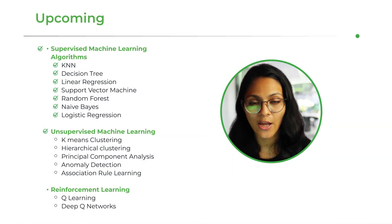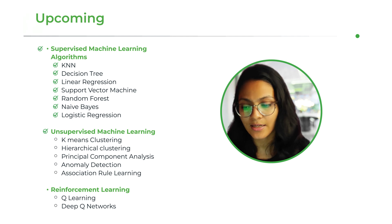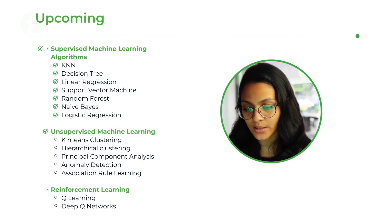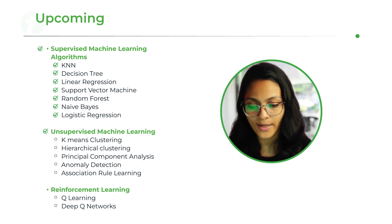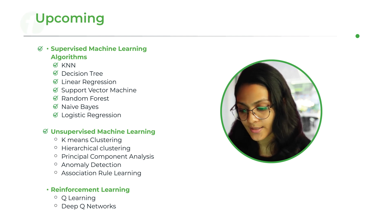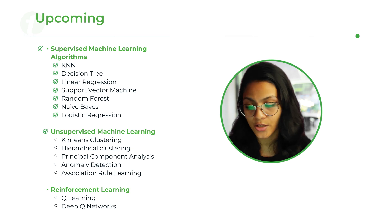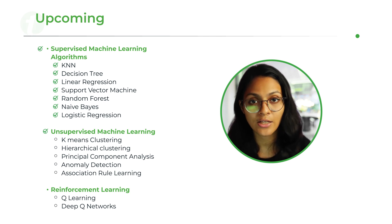So that was it for this video. We have already covered the first part — supervised machine learning algorithm — in which we covered the KNN algorithm, decision tree, linear regression, support vector machine, random forest, naive Bayes, and logistic regression. And in this video we covered unsupervised machine learning algorithm. The rest of the machine learning algorithms we are going to discuss in further videos, so stay tuned with Tutorial's Point. Thanks for watching and have a nice day.